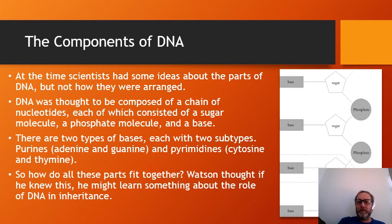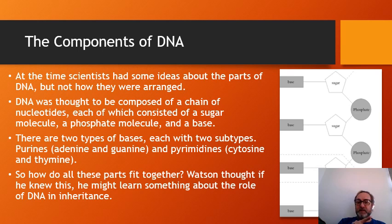Watson wanted to pursue the idea that DNA was responsible for genetic transmission, going against the dominant view. Scientists knew a bit about the parts making up DNA — it's a chain of nucleotides, each consisting of a sugar molecule, a phosphate molecule, and a base. There are two types of bases, each with subtypes: purines (adenine and guanine) and pyrimidines (cytosine and thymine). But the question was how all these parts fit together, and Watson thought figuring this out would teach us a lot about DNA's role in inheritance.